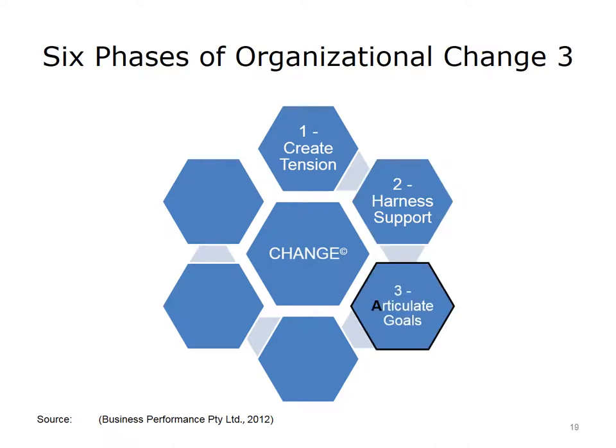The third phase is to articulate goals — in other words, define what you want the desired outcome to be. The goals should be what has been called SMART goals: specific, measurable, attainable, realistic, and timely. Not only should you articulate your goals, but you should identify how you will measure their achievement.